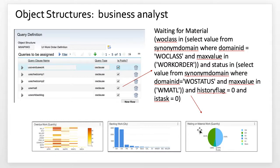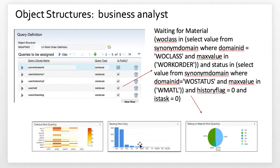Here are a few other examples. Looking at the business analyst work center, she has a number of different containers and content, including some charts or graphs in one of her containers. In this case, the content is not rendered from the same object structure used for the technician and supervisor. Instead, she has a different object structure named MXAPIWOD, and you can see the different queries associated with the different charts. So now we're understanding what is driving the data being displayed in our work centers.